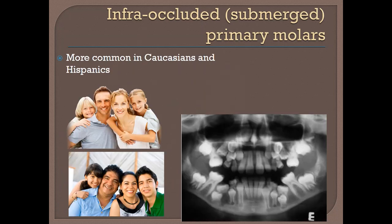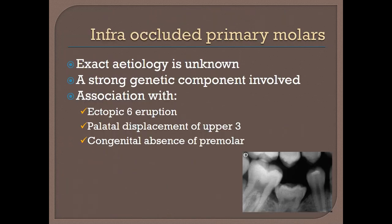It more commonly affects Caucasians and Hispanic ethnic groups. The etiology is really unknown, but there is a strong genetic component. This anomaly can come as a packet with other dental anomalies, such as ectopic eruption of permanent molars, palatal displacement of maxillary canines, or congenital absence of premolars. If you have one of these anomalies, it is important and logical to look for other anomalies in the same patient.